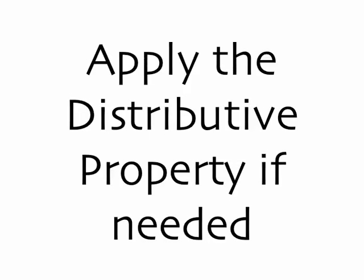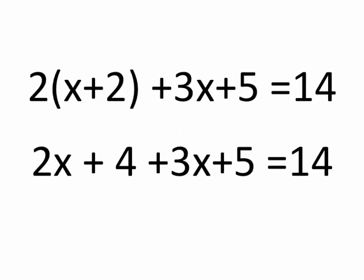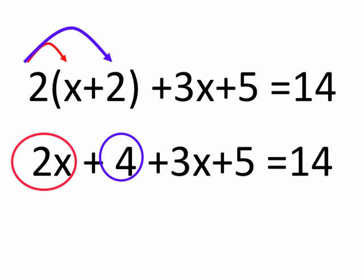The first step is to apply the distributive property if needed. What does that look like in this case? Well, I've shown the original equation on the top line, and I took 2 times x, that gives me the 2x term on the second line, and 2 times 2, that gives me the 4 term on the second line, and everything else in the equation stays the same. So all I did was I applied the distributive property.